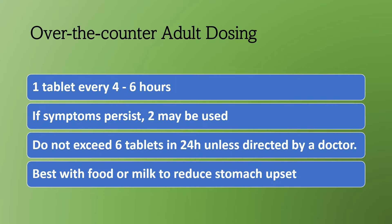For over-the-counter dosing, you'll want to follow the instructions with the ibuprofen that you purchased, but it's generally one tablet every four to six hours. If symptoms continue, two tablets can be used. It's recommended not to exceed six tablets in 24 hours unless your doctor has recommended a higher dose. Ibuprofen is always best taken with food or milk to reduce stomach upset.